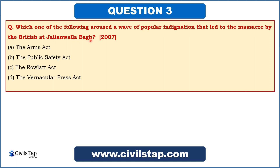We have studied that the Jallianwala Bagh incident happened after the Rowlett Act. People who protested against the Rowlett Act collected at Jallianwala Bagh, and the British opened fire on them. That is why Jallianwala Bagh is related to the Rowlett Act. So the Rowlett Act is the answer here — option C.